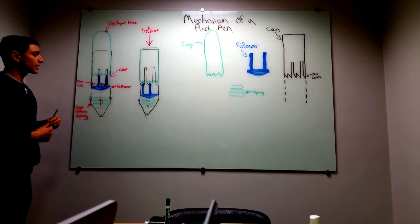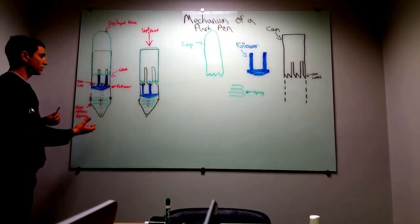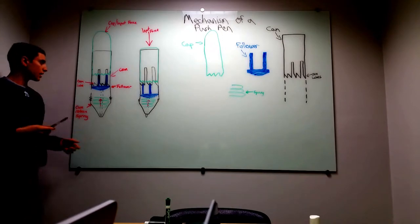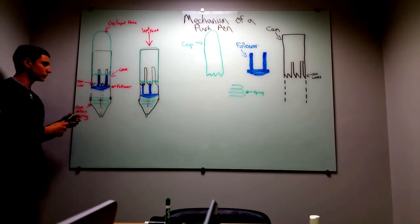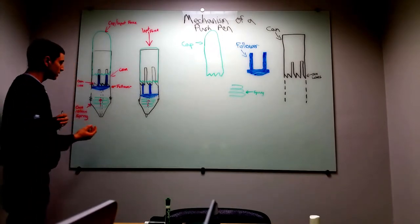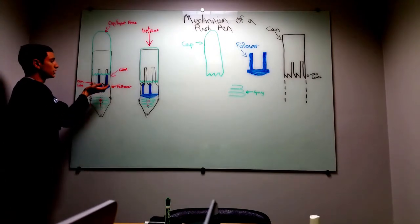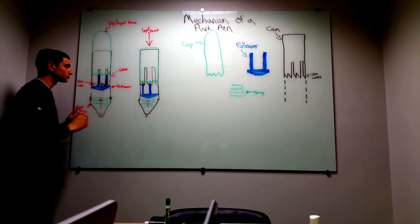Something that keeps the follower and cam from working properly is the cam return spring, which is located in the tip of the pen. This puts constant force on the follower, which allows it to keep in track.